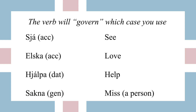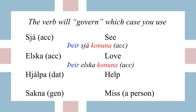For example, the verb al-siao, which means to see — when you look it up in the dictionary it will have ACC written next to it, meaning accusative. Whatever is being seen in your sentence is going to be accusative. Same with al-elska, to love — whatever is being loved is going to be accusative. So the woman — kununa — is in accusative because siao and elska always govern accusative.